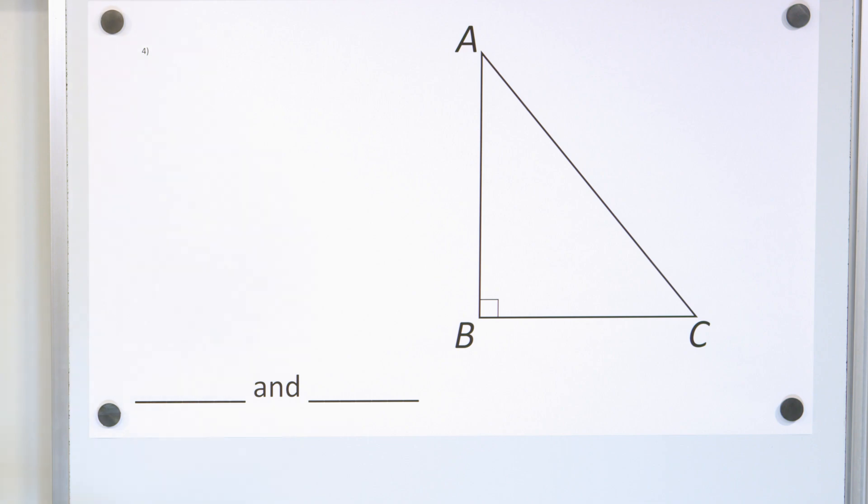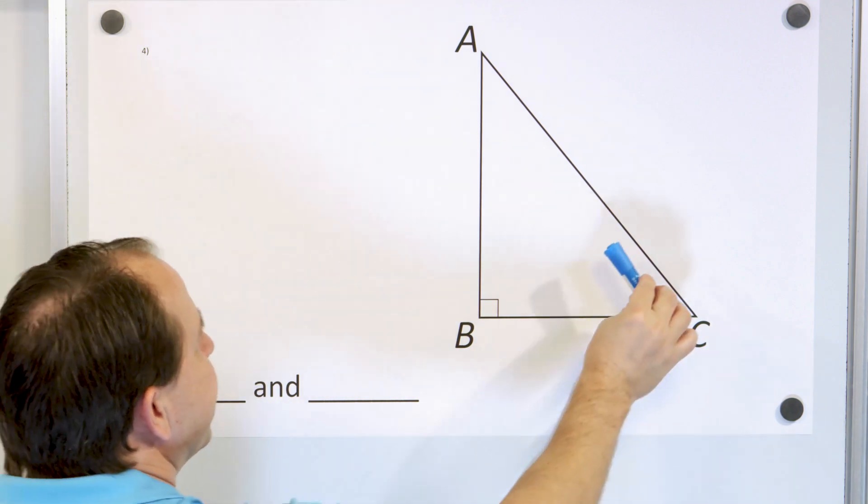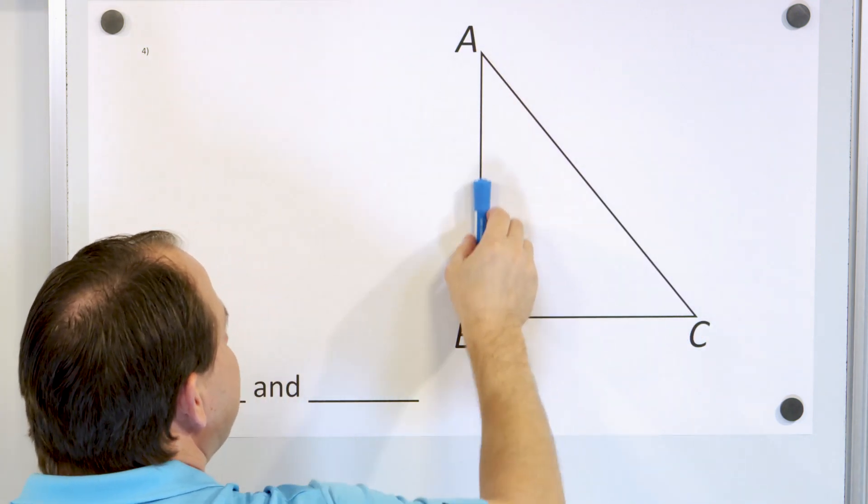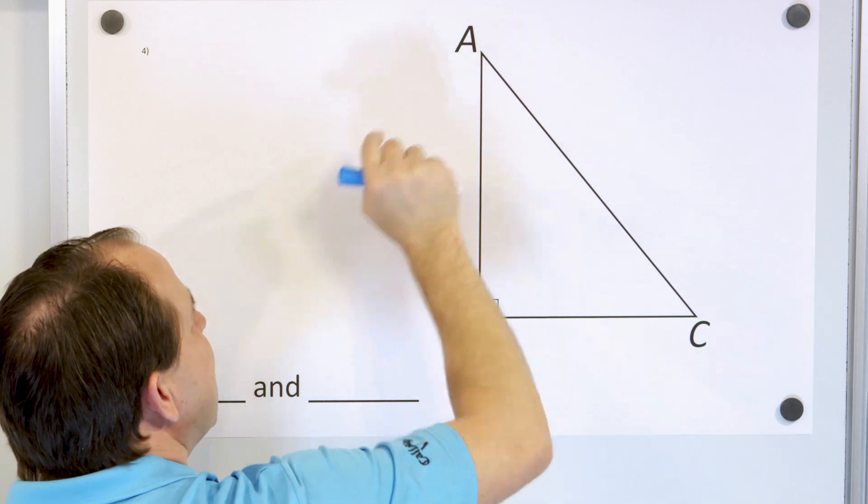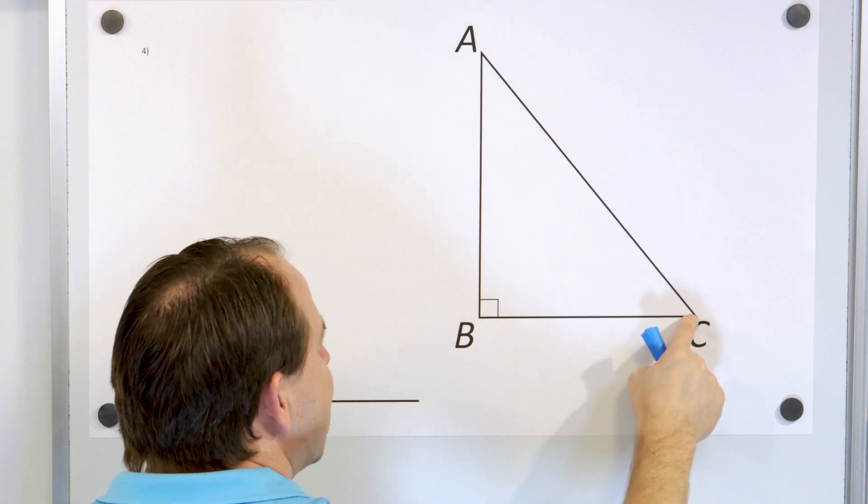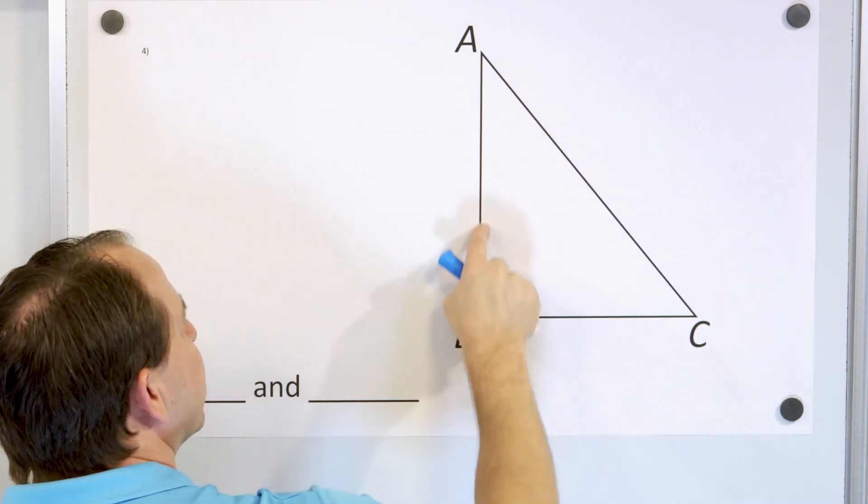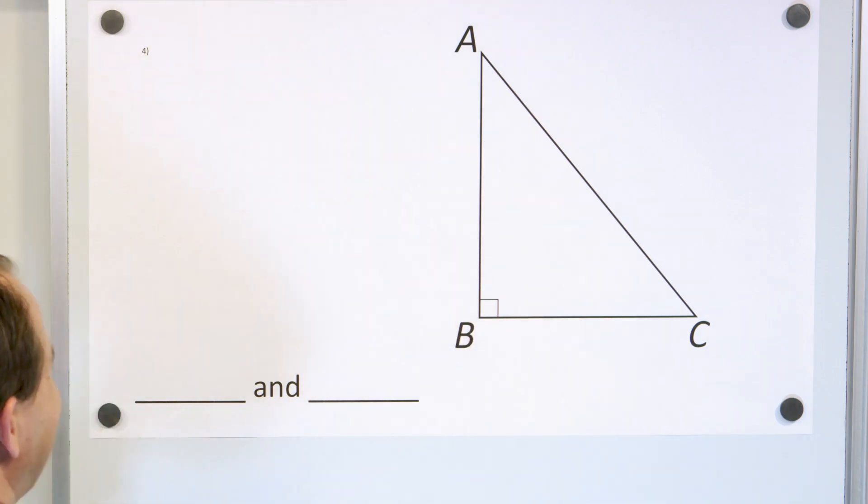So the question I want us to talk about is, let's name a pair of perpendicular line segments in this figure. Well, this is a line segment and it does intersect this line segment, but this angle is not 90 degrees, so it's not perpendicular. This line segment intersects this line segment, but it's not perpendicular because this is not 90 degrees.